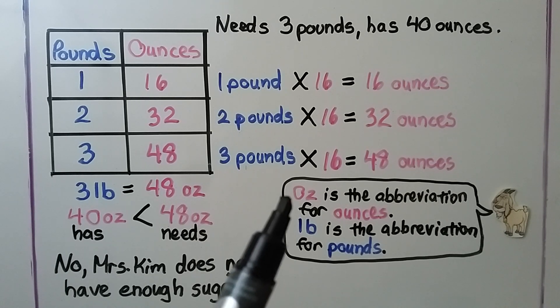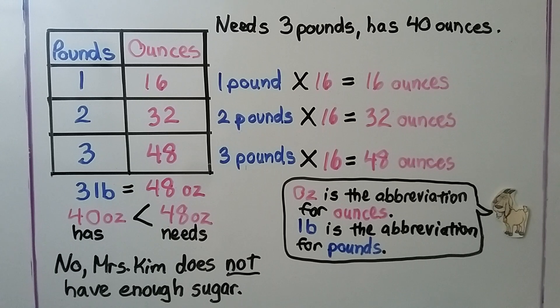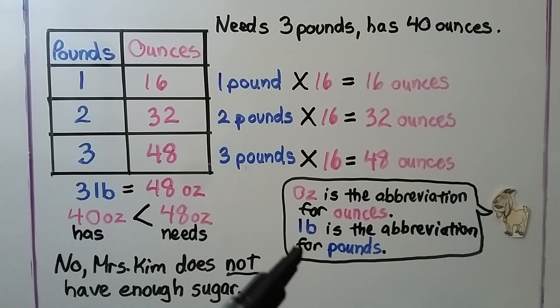The abbreviation for ounces is oz. The abbreviation for pounds is lb.